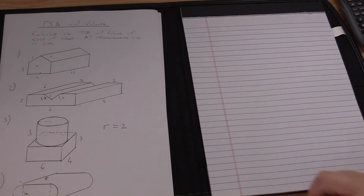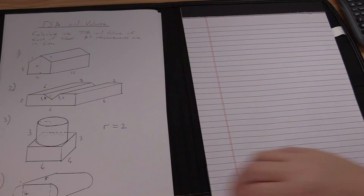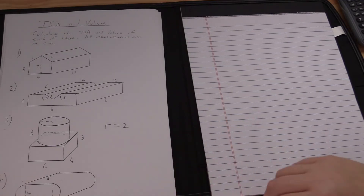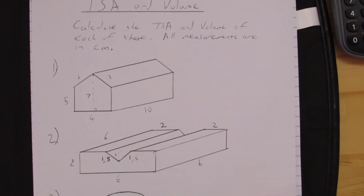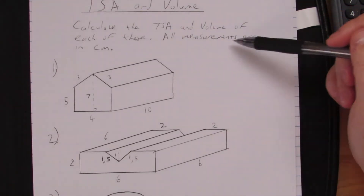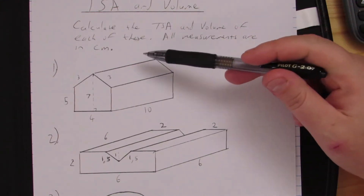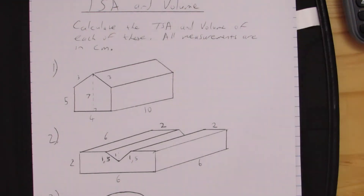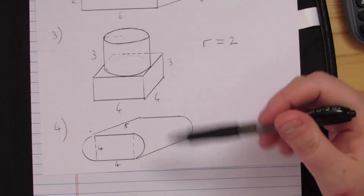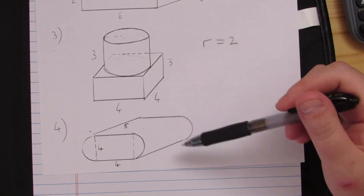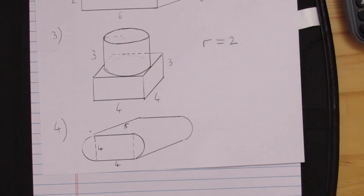We're going to be looking at this total surface area and volume worksheet. We've got to work out the total surface area and the volume of each of these shapes. All measurements are given in centimeters. Something I forgot to mention is that with any questions where there are curves or circles, we're going to be using the pi value of 3.142.